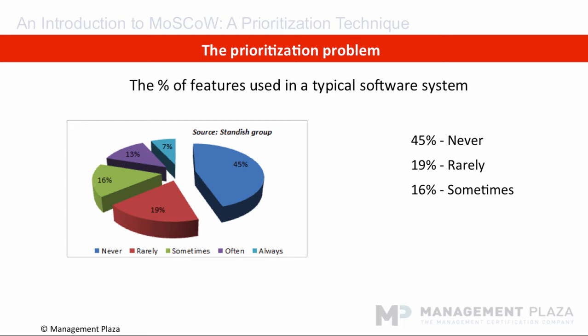16% of the functionality will be used sometimes. 13% of the functionality will be used often and is therefore necessary. And 7% of the functionality will be used always. So the traditional approach is to gather all the requirements, create a project plan, define a budget, and then deliver a solution that won't quite match user requirements and deliver functionality that will never be used. This is how the majority of companies run predictive software projects today.